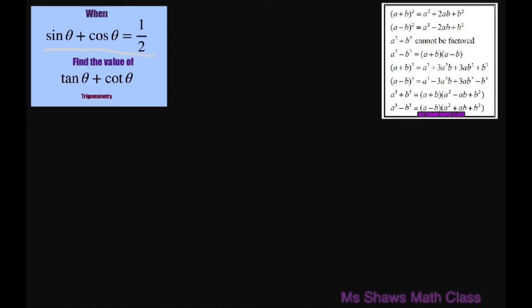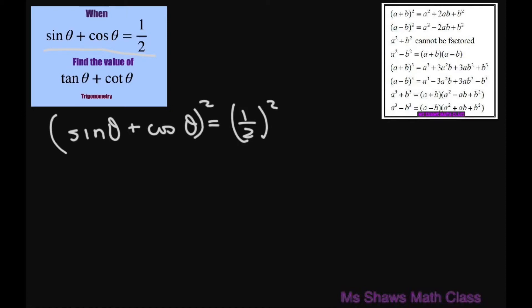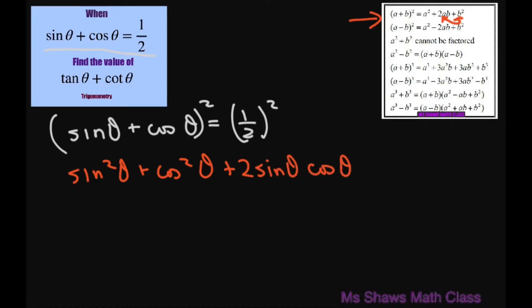The first thing we're going to do is square both sides. Taking sine of theta plus cosine of theta equals 1/2 and squaring both sides, using the expansion formula, we get sine squared of theta plus cosine squared of theta plus 2 sine of theta cosine of theta equals 1/4.